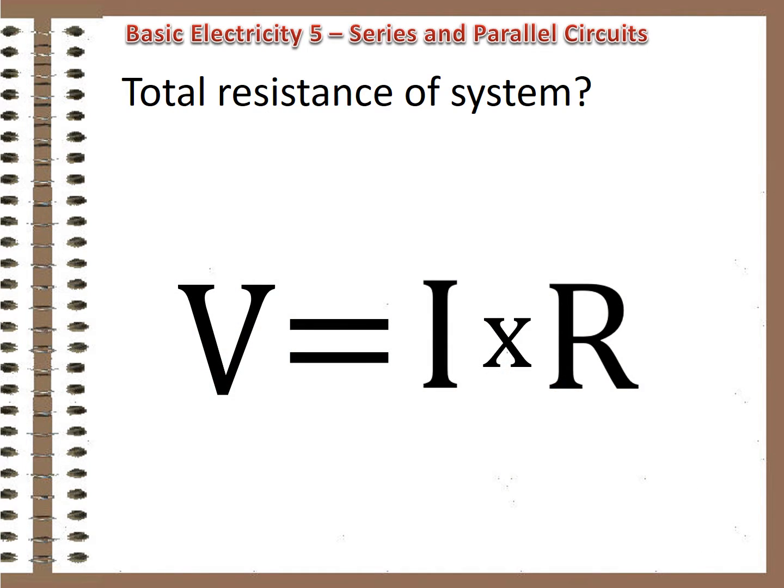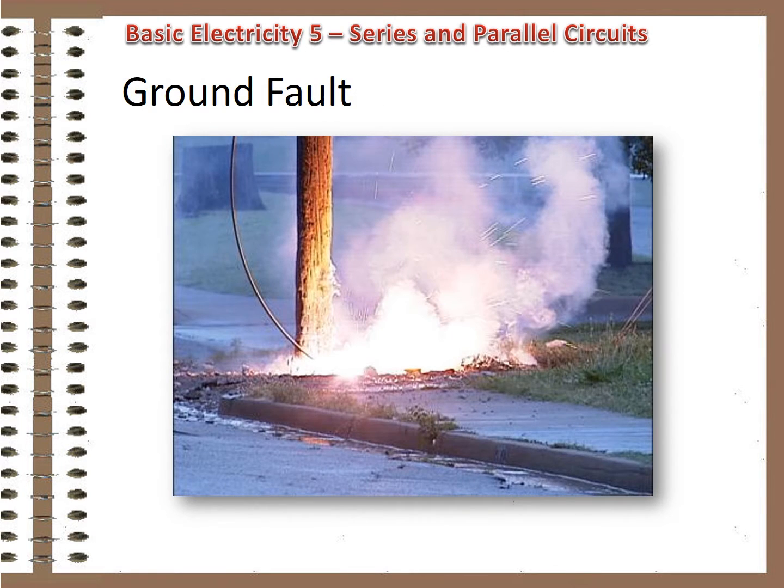Since every additional parallel leg reduces the total resistance of a circuit, you might expect the resistance of the total electric system to be very small. And as resistance drops, current increases. Remember our buddy Herr Ohm. Because of the low resistance, ground faults in a parallel system are very dangerous. The full value of voltage is available to drive current flow and resistance is very low. Watch for my video on staying safe when exposed to fault current.